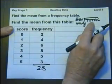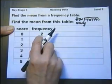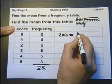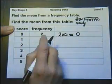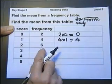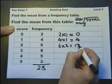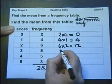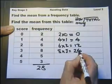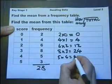In other words, the total score awarded all together. If 2 people scored 0, then 2 multiplied by 0 is the score there. 4 people scored 1, so 4 multiplied by 1 is the total score there. 6 scored 2, so 6 times 2 is the total scores there. 8 times 3, that will give the total score there.